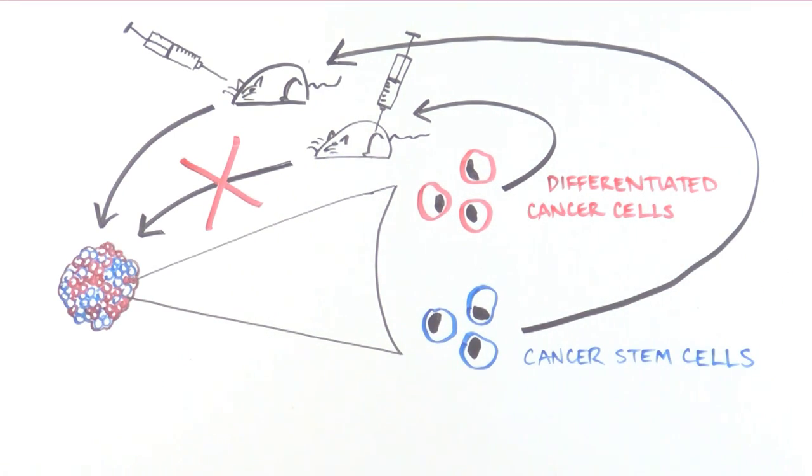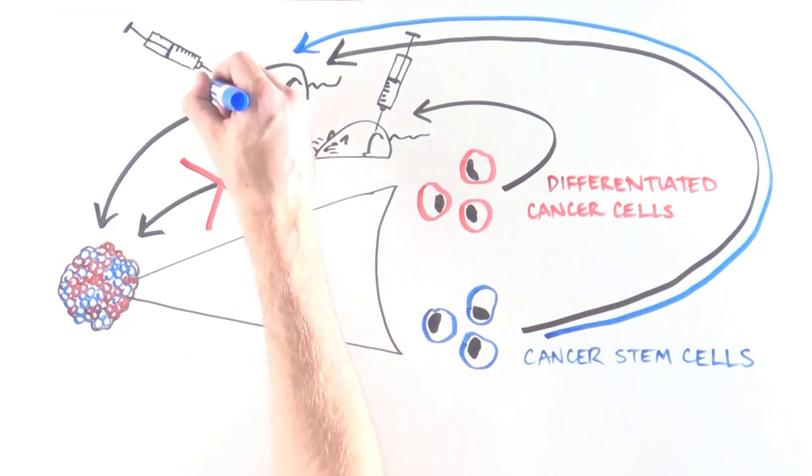Scientists could again take just the cancer stem cells of this new tumor, inject them into mice, and those cells would produce a new tumor with the same organization.